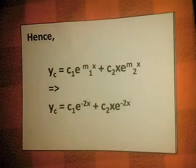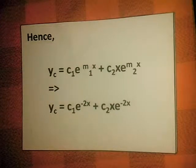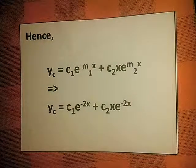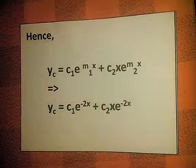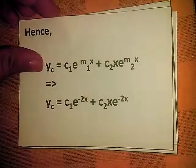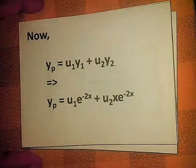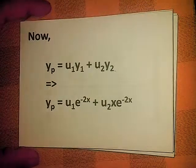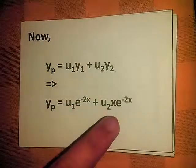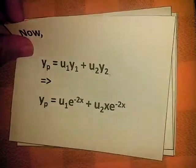Substituting these values into our yc, we get yc = c1·e^(-2x) + c2·x·e^(-2x). We also want to get our yp, which is equal to u1·e^(-2x) + u2·x·e^(-2x).